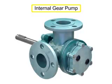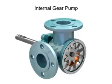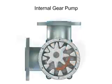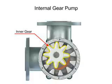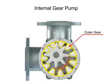Internal gear pumps are exceptionally versatile. This type of pump has one inner gear which is inside a second outer gear. The inner gear has a shaft driven by a motor and has teeth that protrude outward, while the outer gear has teeth that protrude inward toward the center of the pump.